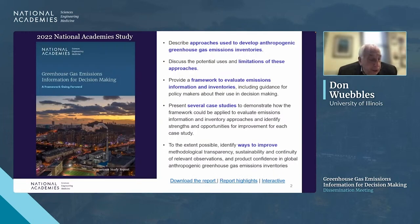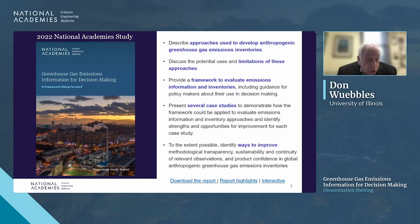The National Academies released a consensus study in October of 2022. The committee considered approaches used to develop greenhouse gas emission inventories as well as their strengths and limitations, and ultimately developed a framework for evaluating greenhouse gas emissions information and to make recommendations for the use of that framework.